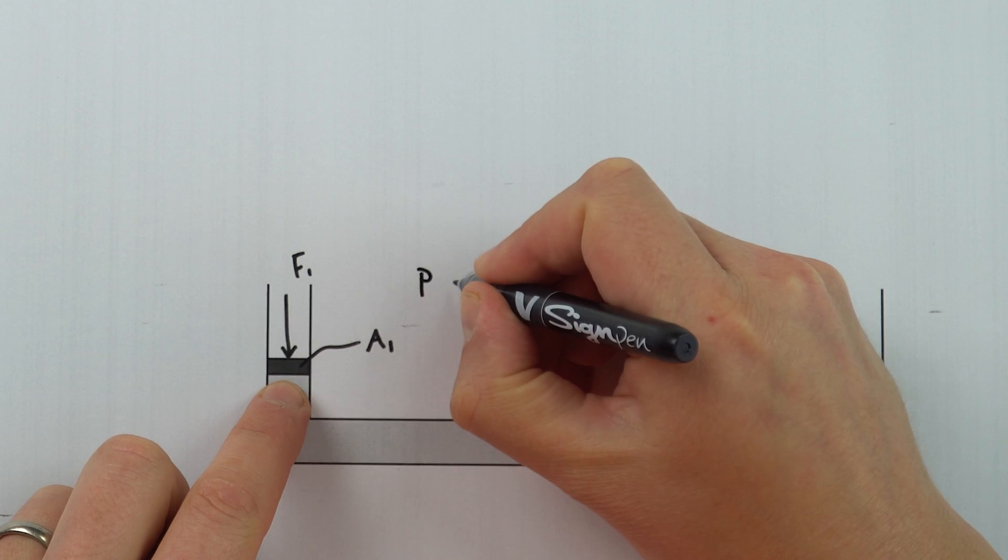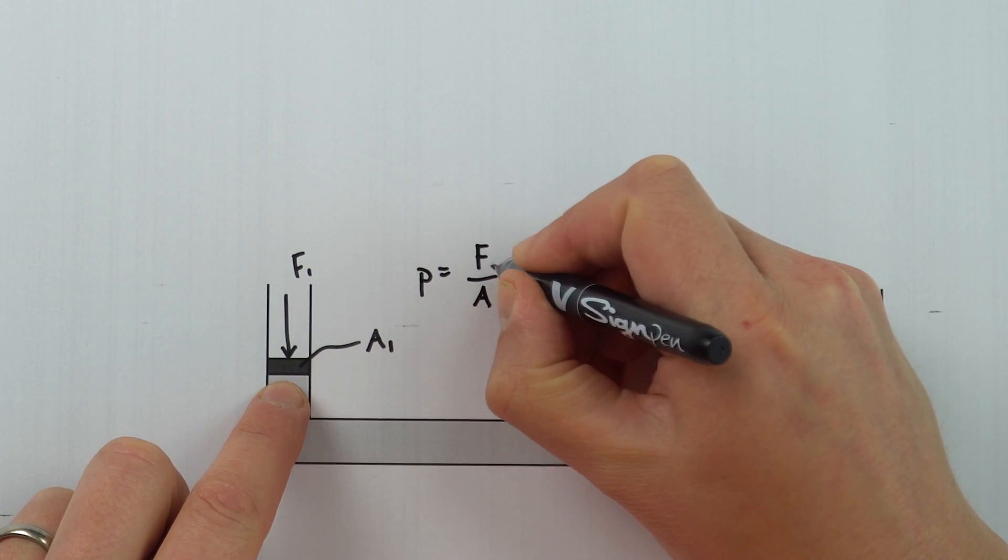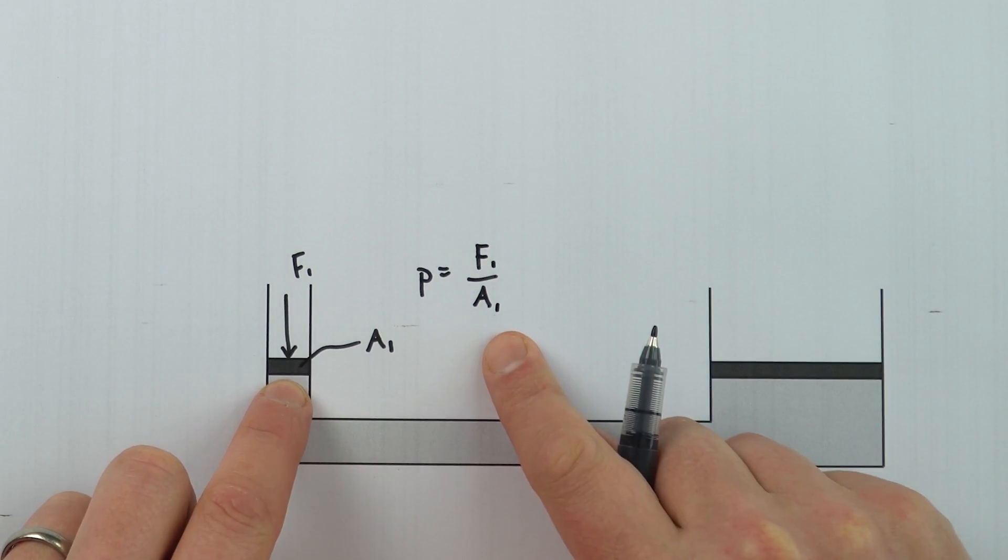We're applying a force over an area and therefore at this point we experience the pressure, and pressure is equal to the force divided by the area - here that's F1 divided by A1.